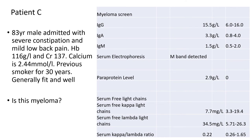So patient C. We have an 83 year old male admitted with constipation and mild low back pain. His HB is a little on the low side. Creatinine is 137 — for an 83 year old male that's not necessarily that low. Calcium is fine at 2.44. He's been a smoker before but otherwise pretty sprightly for his age. Have a quick look and answer the question — is this myeloma?